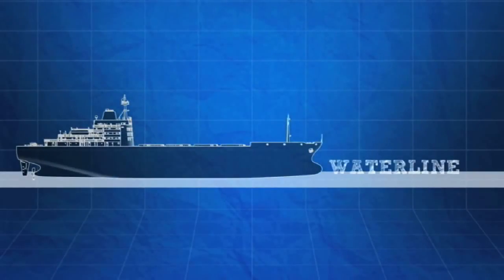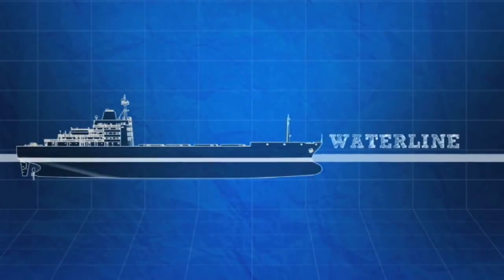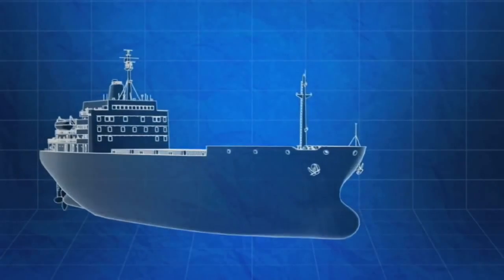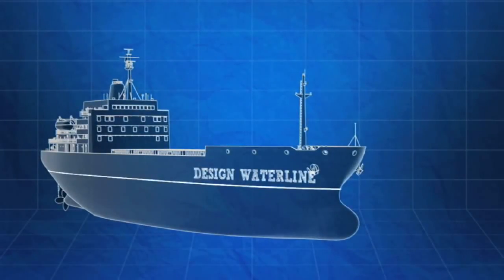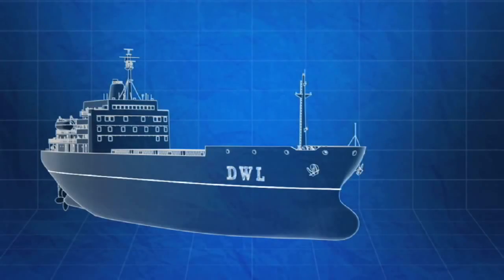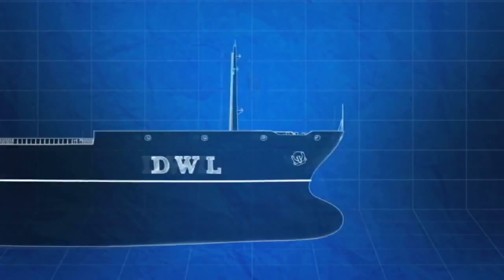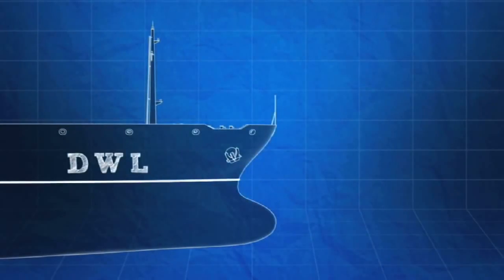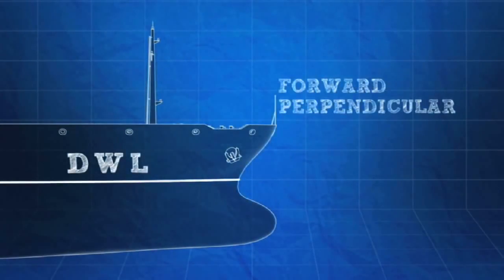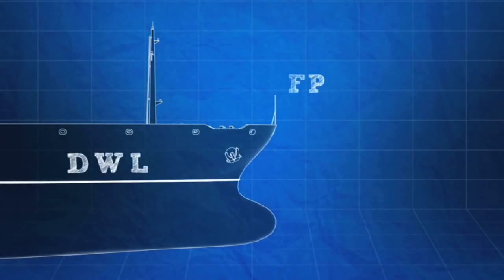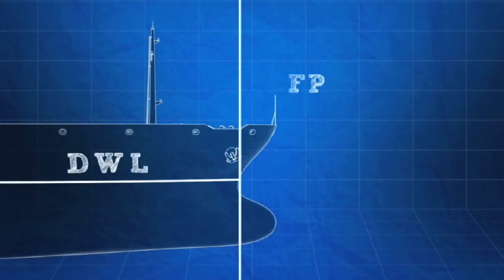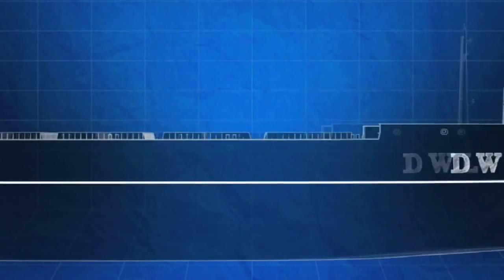The waterline is the intersection of the surface of the water a ship is floating in with the sides of the ship's hull. When a ship is designed, the naval architect determines the design waterline, or DWL, that represents the waterline of a ship under full load or maximum draft conditions on an even keel. The forward perpendicular, or FP, is a vertical line drawn at the intersection of the design waterline and the foreside of the stem of the hull.